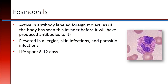Eosinophils are active in antibody-labeled foreign molecules. If the body has seen the invader before, it will have produced antibodies to it. Eosinophils generally become elevated in allergies, skin infections, and parasitic infections. The lifespan of an eosinophil is between eight and twelve days.